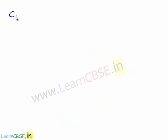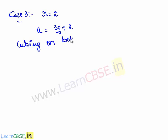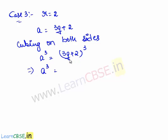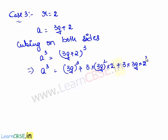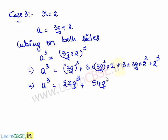Now let us take case 3 where r equals 2, so a equals 3q plus 2. Cubing both sides, a³ equals (3q plus 2)³, which expands as (3q)³ plus 3 times (3q)² times 2 plus 3 times 3q times 2² plus 2³, giving 27q³ plus 54q² plus 36q plus 8.